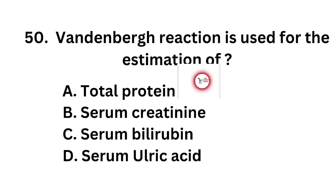Question number 50. Van der Berg reaction is used for the estimation of: Option A: Total protein. Option B: Serum creatinine. Option C: Serum bilirubin. Option D: Serum uric acid.